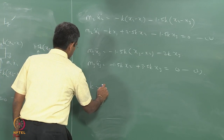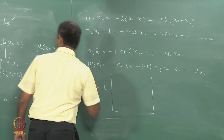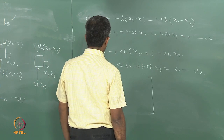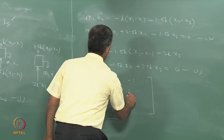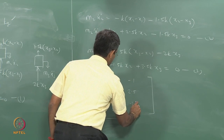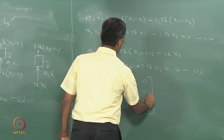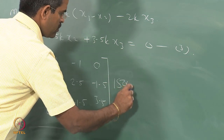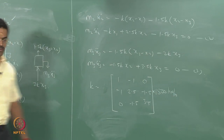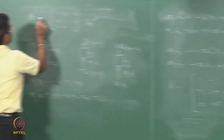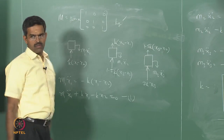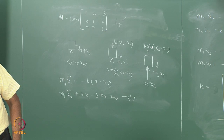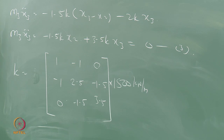Substituting the values — k = 1500 kN/m and m = 3500 kg — I obtain the mass matrix M and stiffness matrix K. With these, using the equation for a₀ and a₁, I can now compute the Rayleigh damping constants.